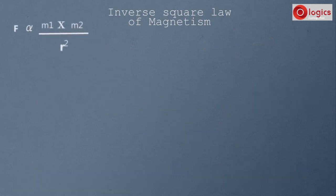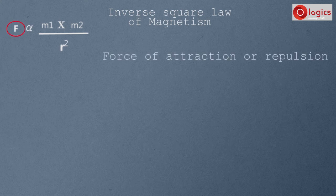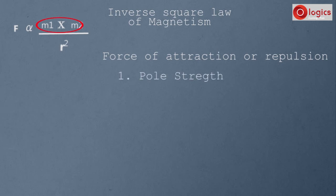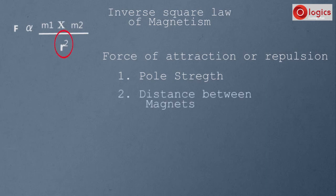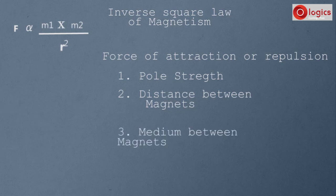Between two magnets, the force of attraction or repulsion depends on pole strength — if pole strength is more, attraction or repulsion is more. It also depends on distance between magnets: if distance is more, attraction or repulsion is less, and if distance is less, attraction or repulsion is more. There is one more factor which influences the force of attraction or repulsion — that is the medium between the magnets.